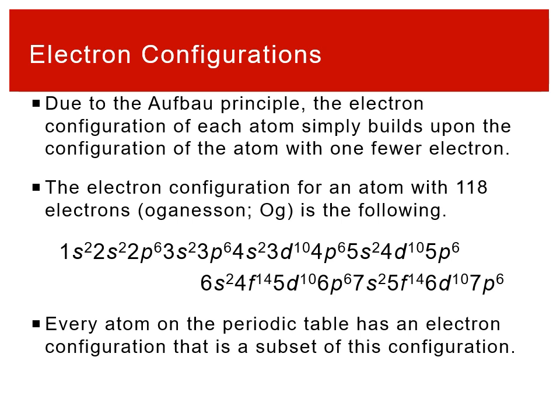The aufbau principle ordering is always the same. The bottom-right of the periodic table is oganesson, element 118, with 118 electrons. If you put all those electrons into orbitals following this ordering, you get a very long electron configuration. Importantly, it is built upon all the electron configurations of all the smaller atoms on the periodic table — we can see the same patterns: 1s² 2s² of beryllium, continuing through to 3p⁶ for silicon, then the chromium pattern, just with all the higher energy orbitals filled in.